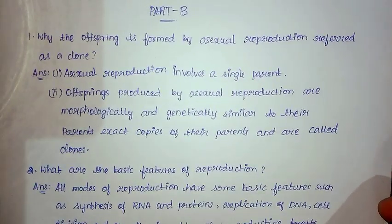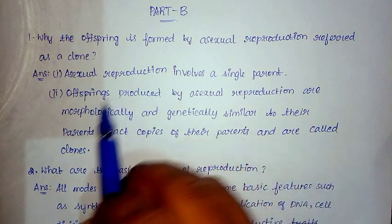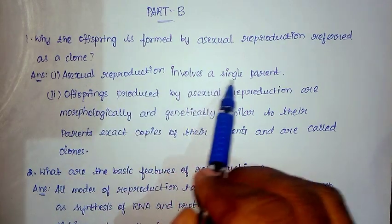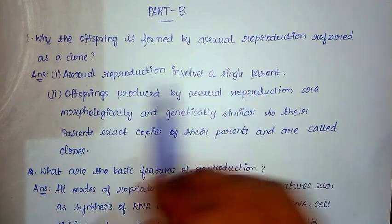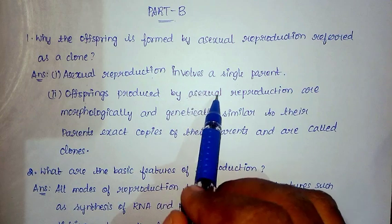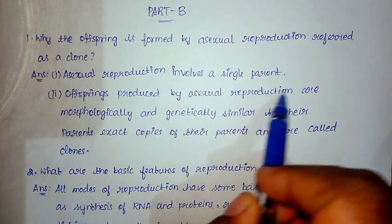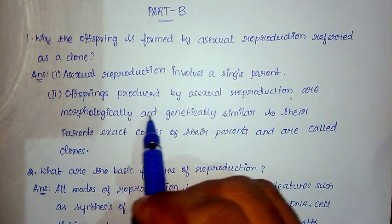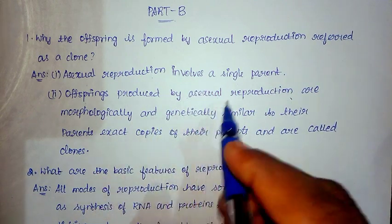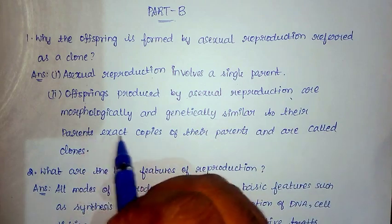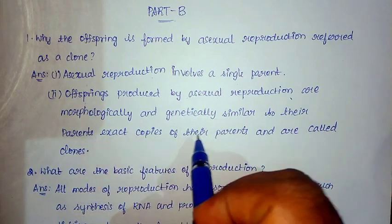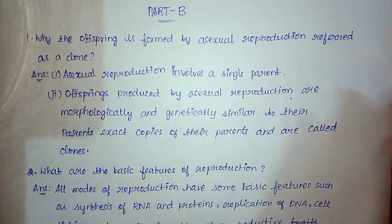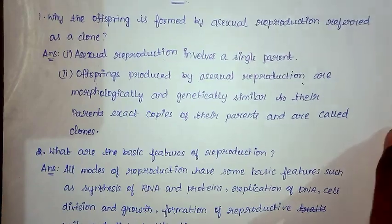For Part B, first question: asexual reproduction involves a single parent. Offspring produced by asexual reproduction are morphologically and genetically similar to their parents — exact copies of their parents — and are called clones.